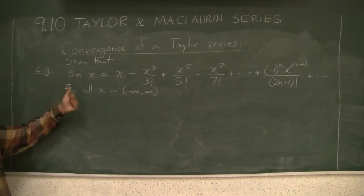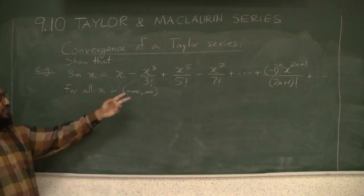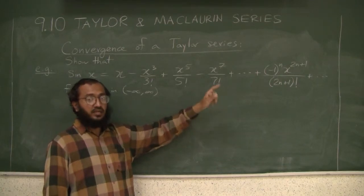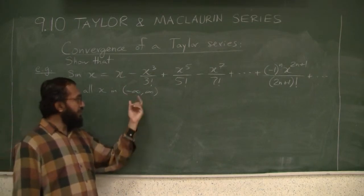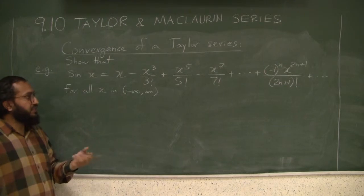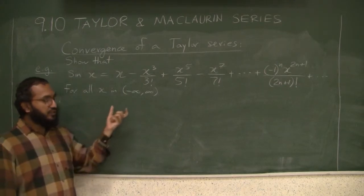In the lecture before the last lecture we developed this as the Taylor series for sine of x, and we said that by looking at these terms and using the ratio test we can see that the series converges for all numbers negative infinity to infinity. But we didn't say it converges to the sine of x because we didn't have a way of checking that. Now we can use that error theorem to check that.